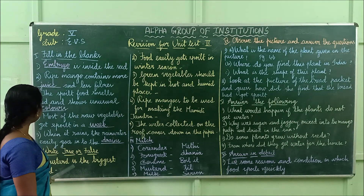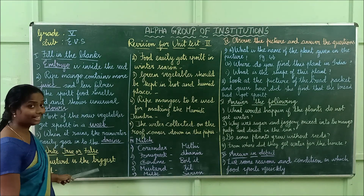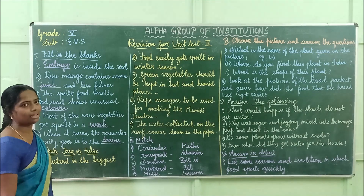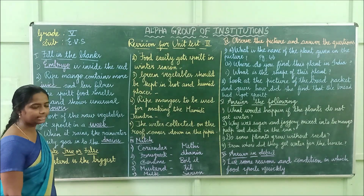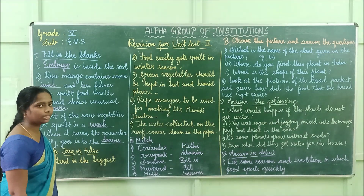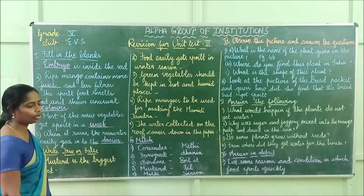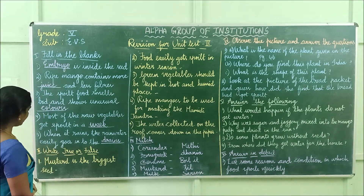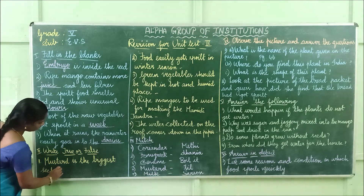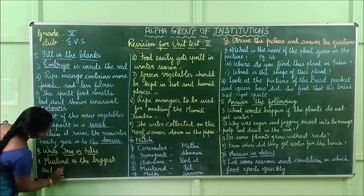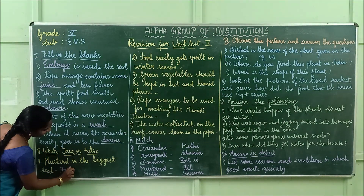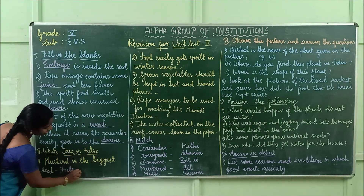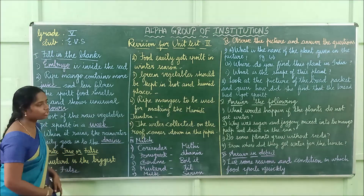Now moving to true or false. Part one: mustard is the biggest tree — that is false, it is corn only. The answer is false.